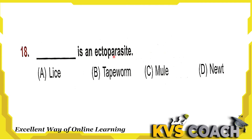Next question: which is an ectoparasite? An ectoparasite is a parasite that lives on the superficial layer of the skin of its host. Option A — lice — yes, lice is an ectoparasite that lives in the hair of the host. Option B — tapeworm — it is a parasite but lives inside the body. Options C and D — mole and newt — they are not ectoparasites. So lice is the right answer.